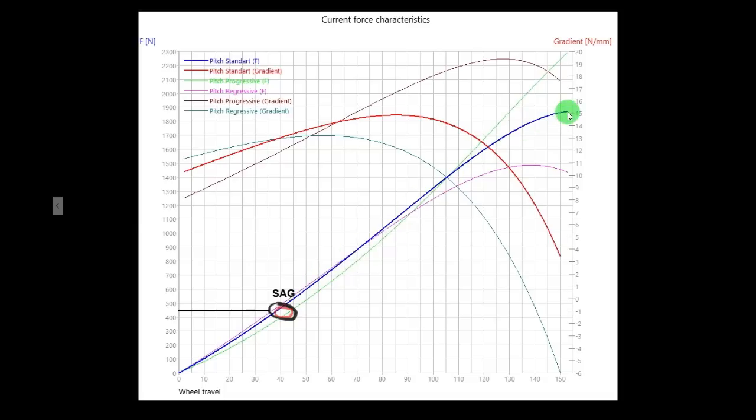As you can see, the blue line is the standard pitch and the green line is the progressive pitch. For this bike you need more force to compress the bike regarding to the regressive pitch, which needs less force to compress the bike.